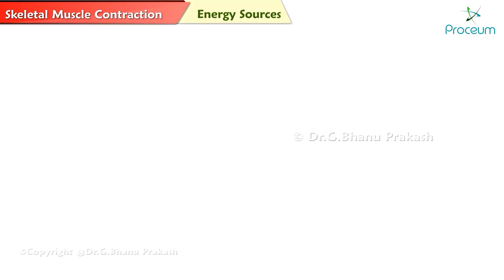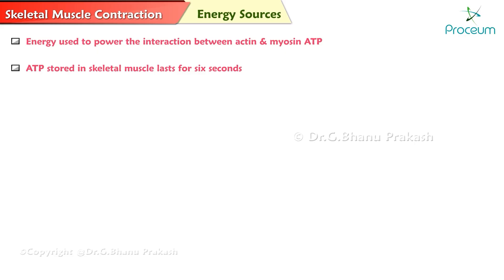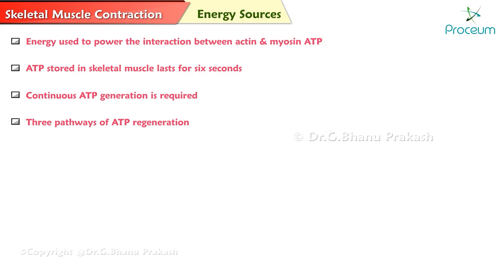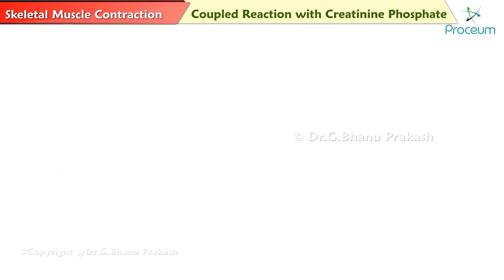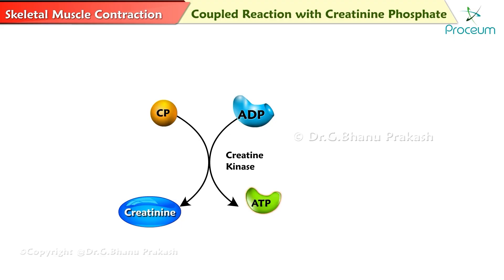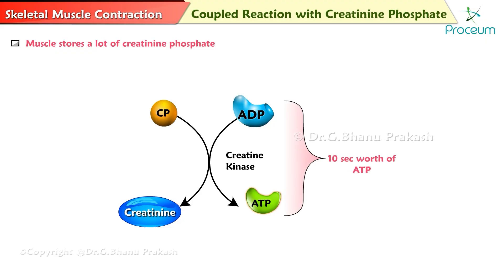Energy sources for contraction. The energy used to power the interaction between actin and myosin comes from ATP. ATP stored in skeletal muscle lasts only about 6 seconds, so ATP must be regenerated continuously if contraction is to continue. There are three pathways: coupled reaction with creatine phosphate, anaerobic cellular respiration, and aerobic cellular respiration. Creatine phosphate plus ADP produces creatine plus ATP. Muscle stores a lot of creatine phosphate, and this coupling reaction allows for about 10 seconds worth of ATP.